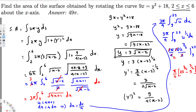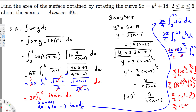Now, 25 = 5², so 25^(3/2) = 5³ = 125. And 9 = 3², so 9^(3/2) = 3³ = 27. Therefore the answer is (π/2)(125 - 27) = (π/2)(98) = 49π. The surface area is 49π. That's how we do this kind of problem — hope you found this video helpful, see you next time.